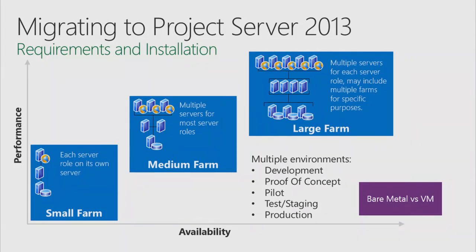Medium and large farms provide more availability, better performance, and better scaling. You can take servers offline to rotate them — applying patches and fixes without bringing down the whole farm. One caveat: the Project Calculation Service doesn't currently handle shutting off a server gracefully, so taking a server out of rotation requires additional work to ensure no active calculations, and affected users may need to resubmit their scheduling jobs. You should also maintain multiple environments: development, proof of concept, test, and staging — so hotfixes or third-party apps are validated before hitting production.